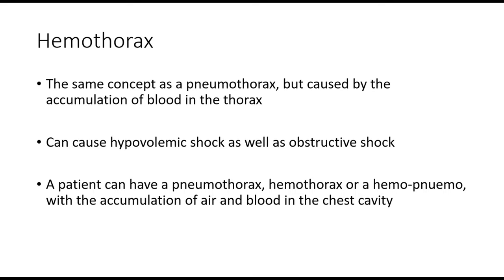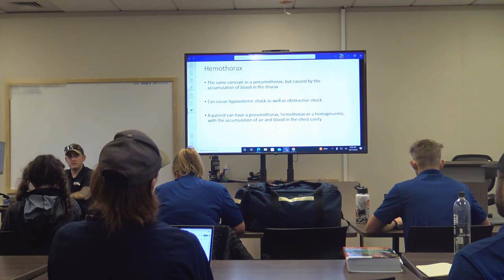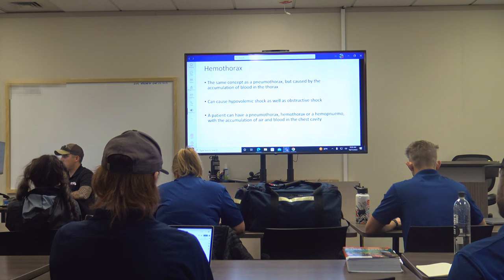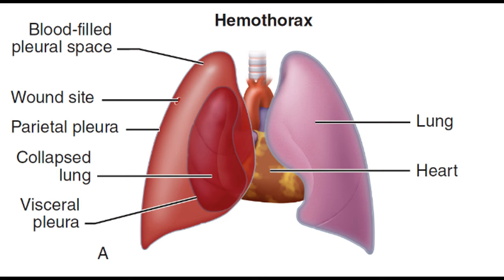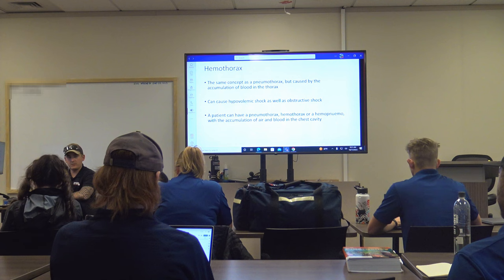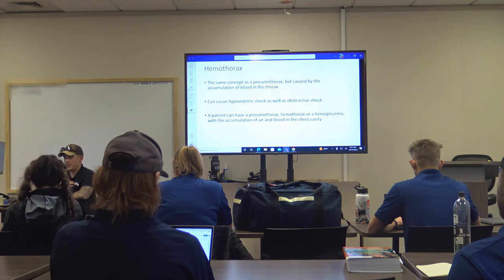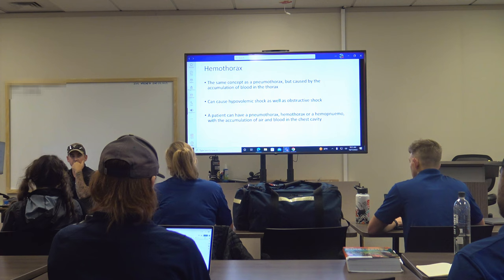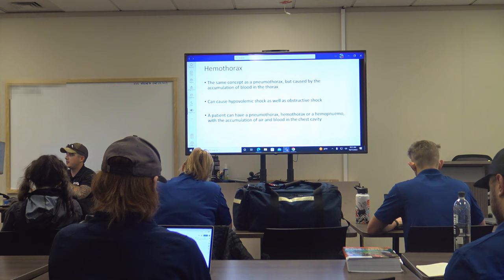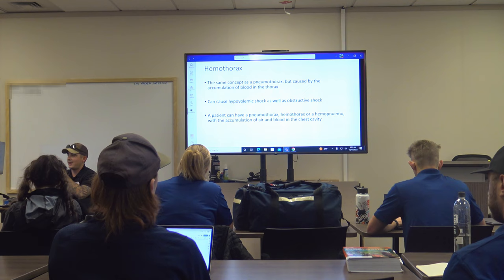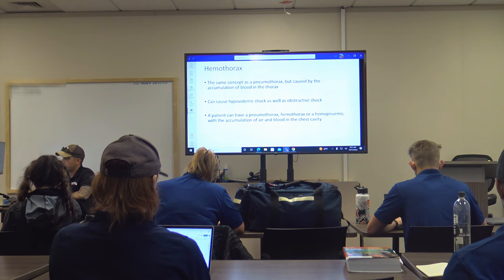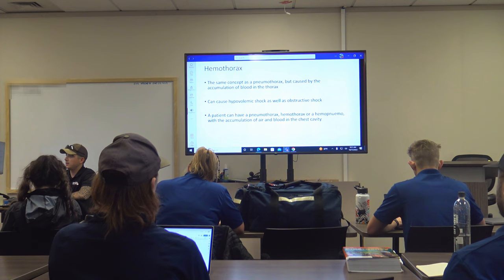A hemothorax is different from a pneumothorax — it's an accumulation of blood in the thorax rather than air. Under every rib there's a vein, artery, and nerve, and broken ribs or penetrating injuries cause bleeding from those vessels into the chest cavity. It doesn't have to be the great vessels — it can be the intercostal veins and arteries. Even broken ribs can cause serious bleeding.